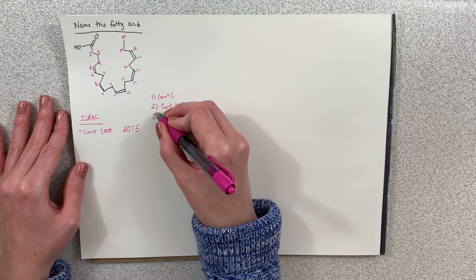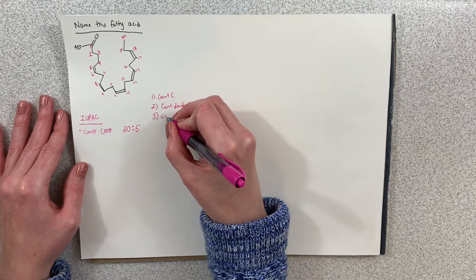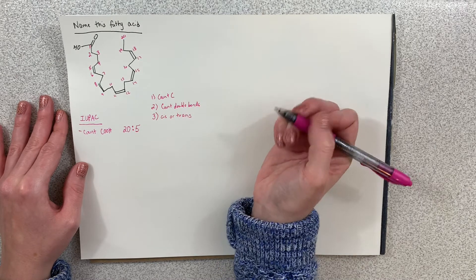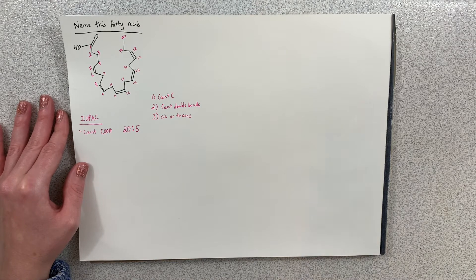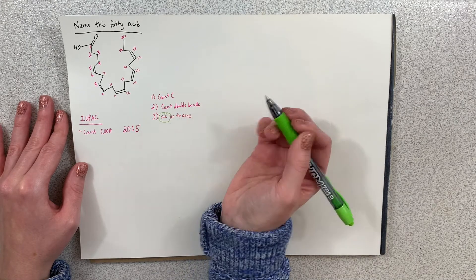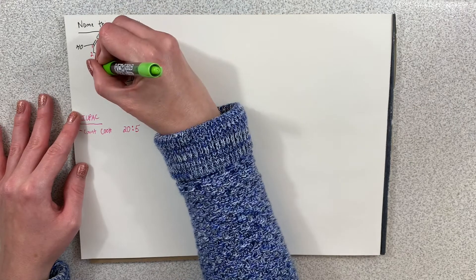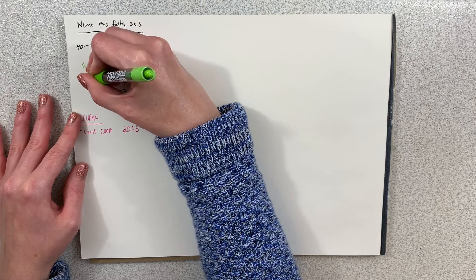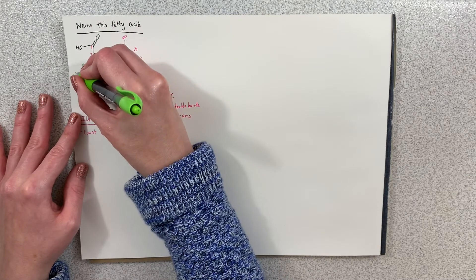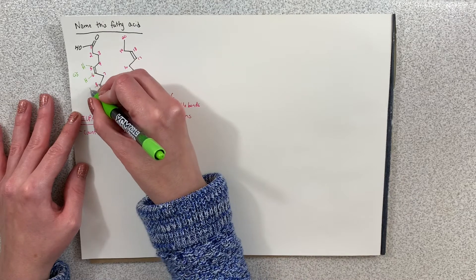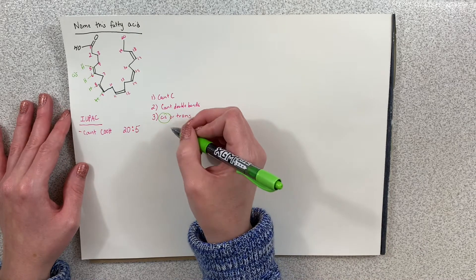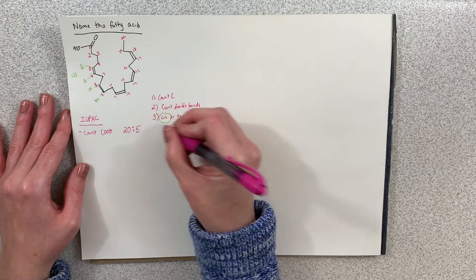Because this is an unsaturated fatty acid, we have to decide: are these double bonds cis or trans or a mixture? We're lucky here because each is actually in the cis formation. If you have trouble seeing this, draw in where your hydrogens would come out — the hydrogens are coming out the same side, which means it's cis. 'Cis' means same. All of these double bonds are cis.